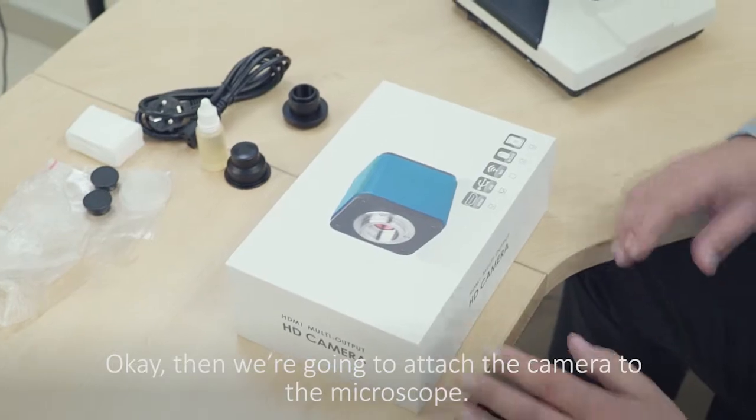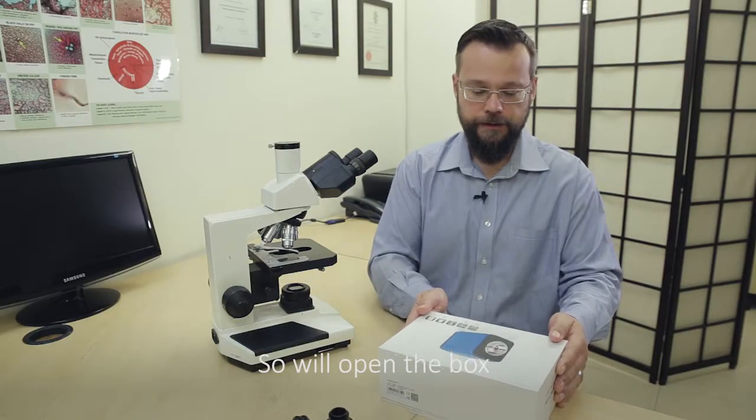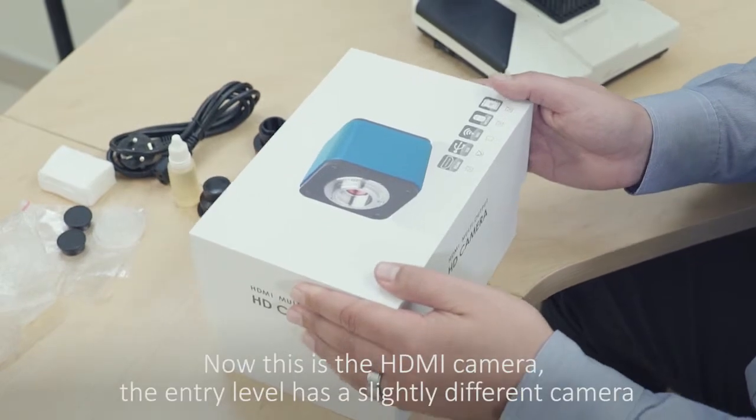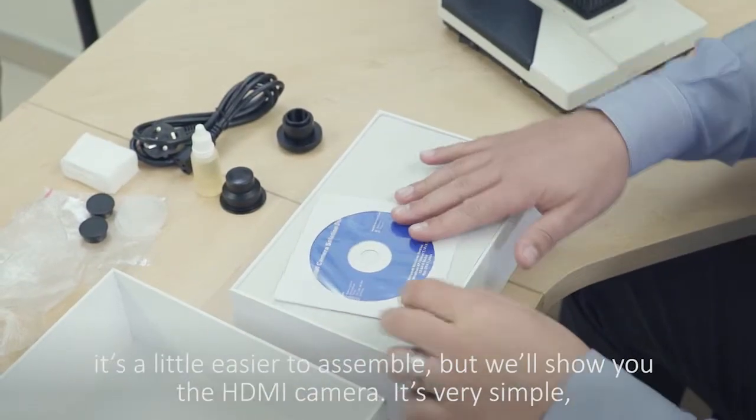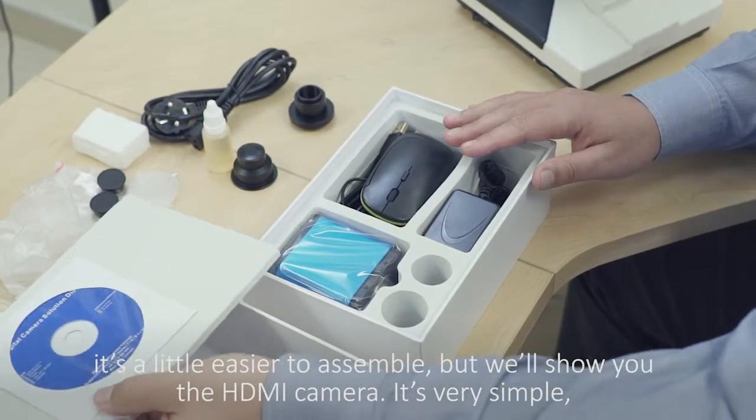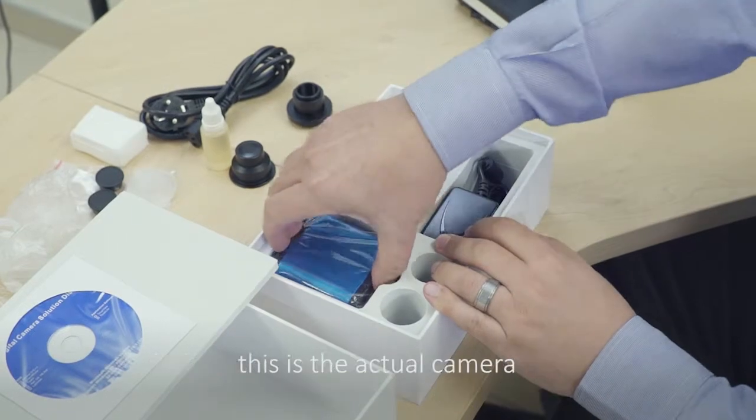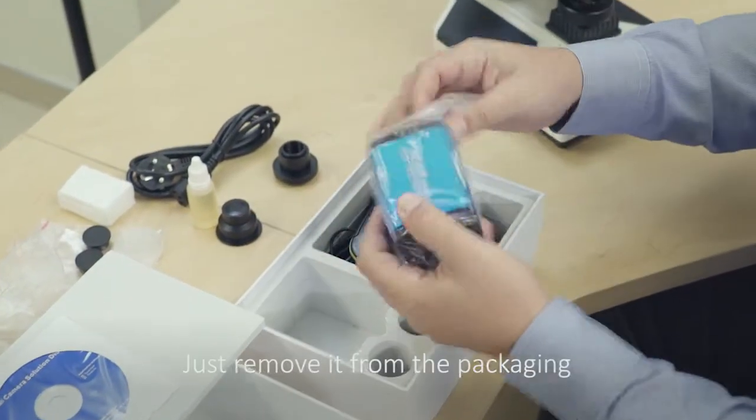Okay, then we're going to attach the camera to the microscope. So we will open the box. Now this is the HDMI camera. The entry level has a slightly different camera, it's a little easier to assemble, but we'll show you the HDMI camera. Very, very simple. This is the actual camera. Let's remove it from the packaging.